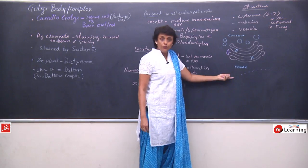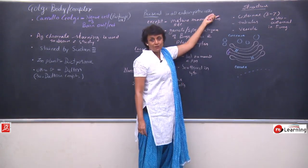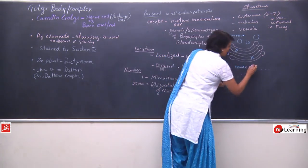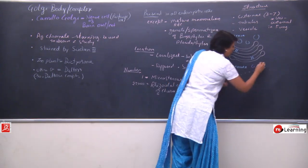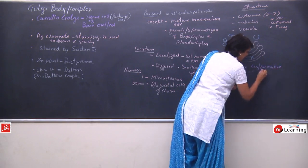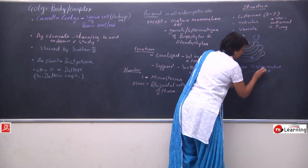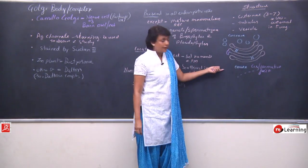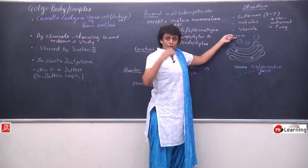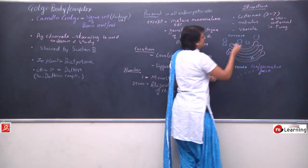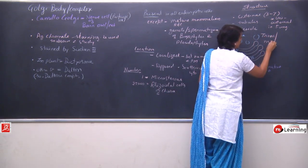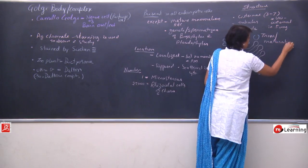The convex surface faces the nuclear membrane and is known as the cis or formative face. The concave surface, which faces the plasma membrane, is known as the trans or maturation face. Something starts forming from the cis face and gets completed by the trans end.